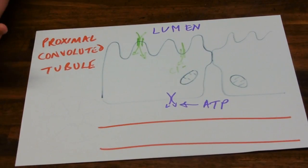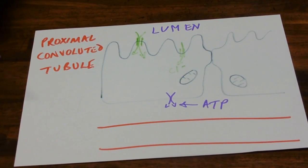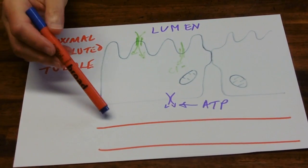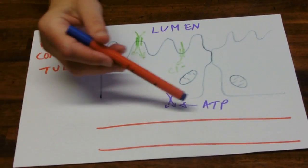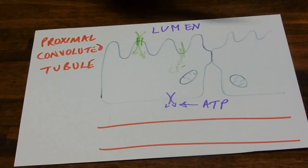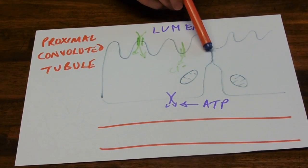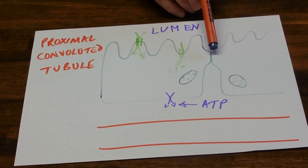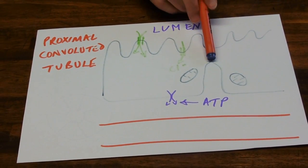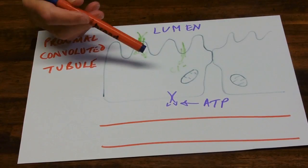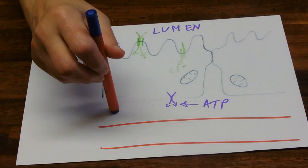There's a couple of other features that you might see labelled on diagrams for you. This gap between the cell and the capillary is called the basal channel.